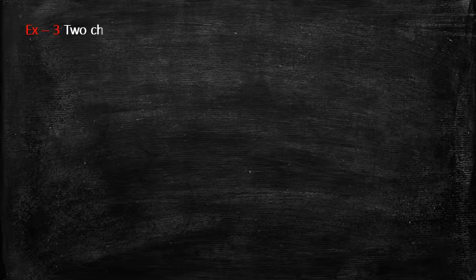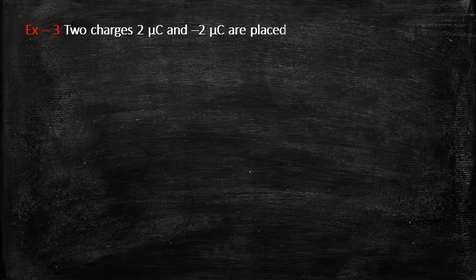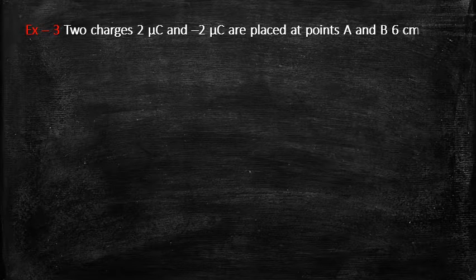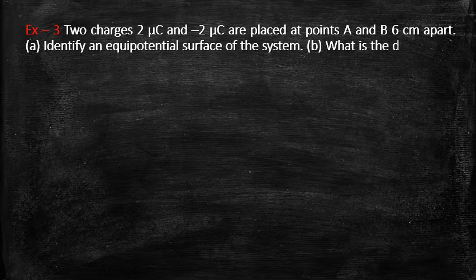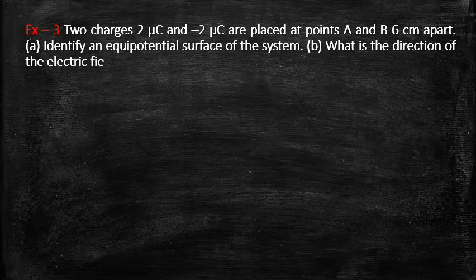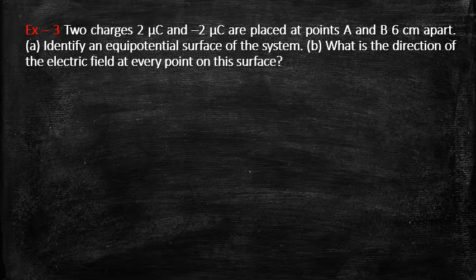In the third problem, we have two charges: +2 microcoulombs and −2 microcoulombs placed at points A and B, 6 centimeters apart. We are asked to identify an equipotential surface for this system of charges and to find the direction of the electric field at all points on that equipotential surface — an interesting problem.